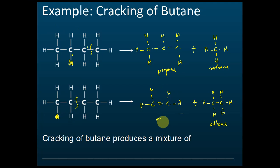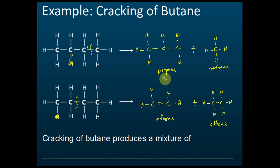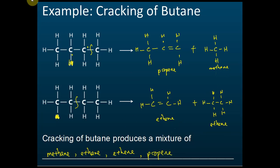The products in that case are ethene and ethane. In the exam, they may ask you about the cracking of butane — it produces a mixture of methane, ethane, ethene, and propene. You need to know the products produced from cracking of butane.